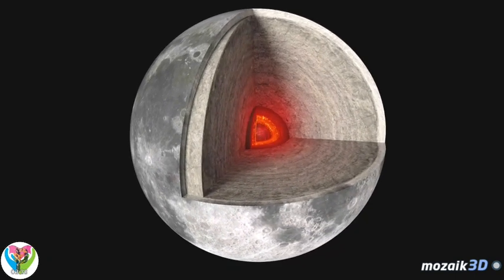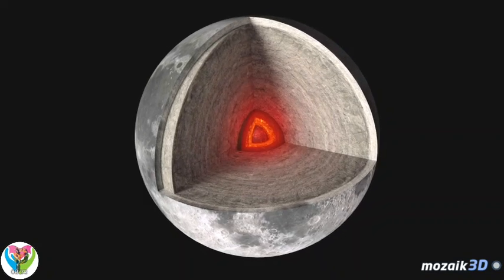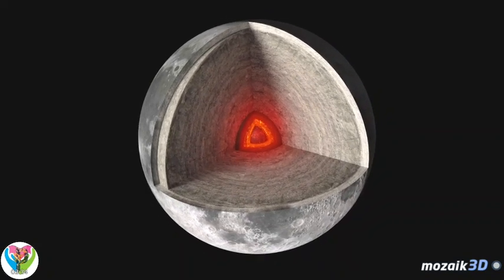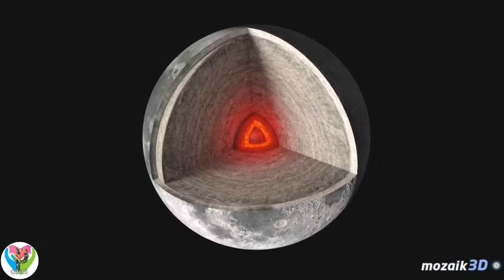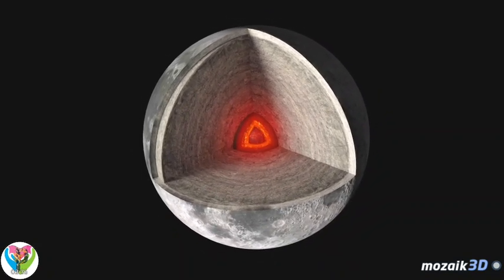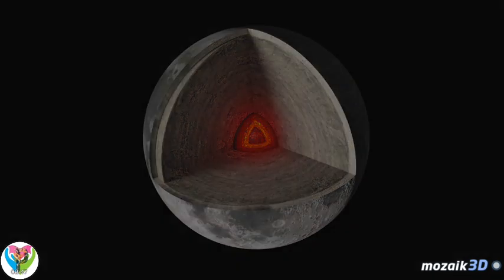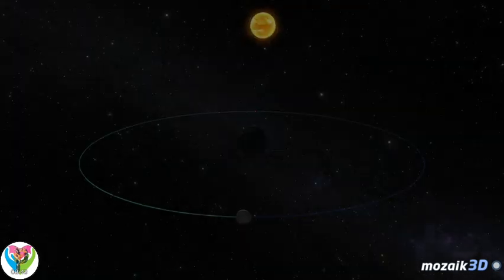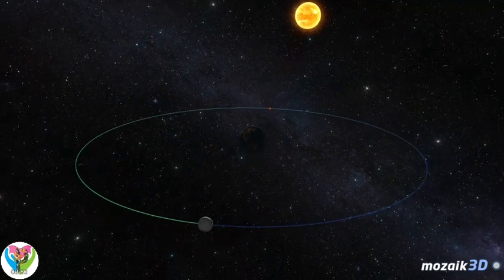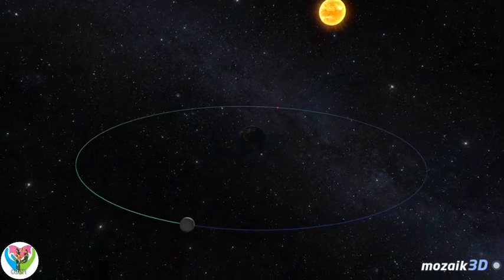The material of the disk soon collected into a spherical shape due to gravity, and the Moon was formed. At that time, it was about 20 times closer to the Earth than it is today. The Moon's diameter is about one-fourth of the Earth's. It is an extremely large moon in the inner solar system compared to its mother planet.